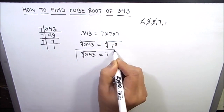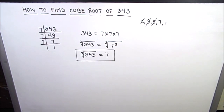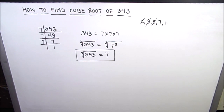So the cube root of 343 is 7. I hope this video is helpful to you. If you like the video, please hit the like button and subscribe to my channel for more math videos. Thanks for watching!